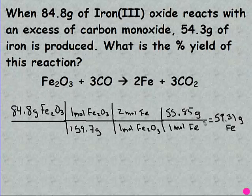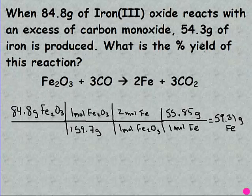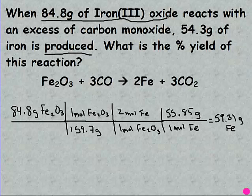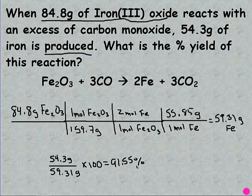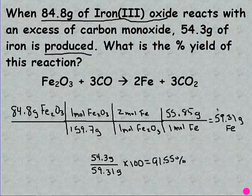So first you needed your theoretical yield. They told you that iron was produced, and so we had to convert our grams of Fe₂O₃ to grams of iron. So first we did our moles, then our mole-to-mole ratio, and then finally moles back to grams. Our theoretical yield was 59.31, and then we put our actual over our theoretical and times 100 to give us 91.55 percent.